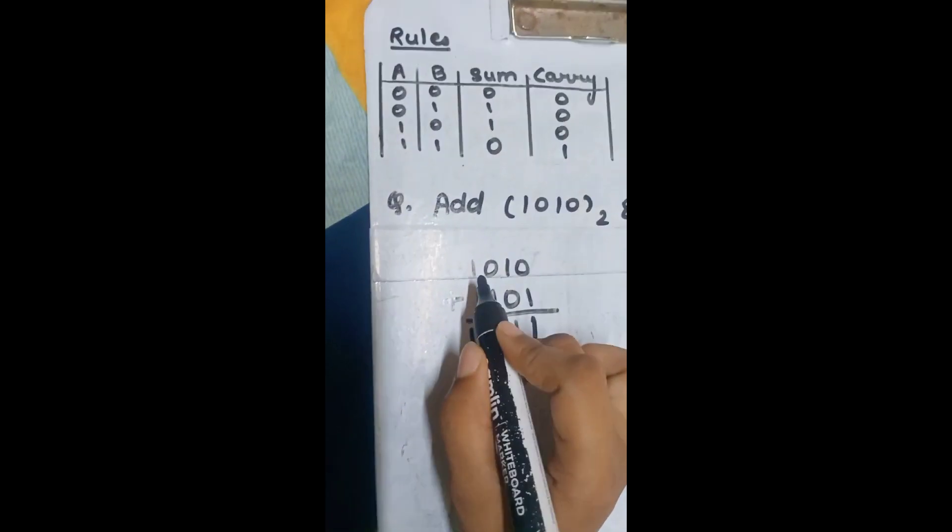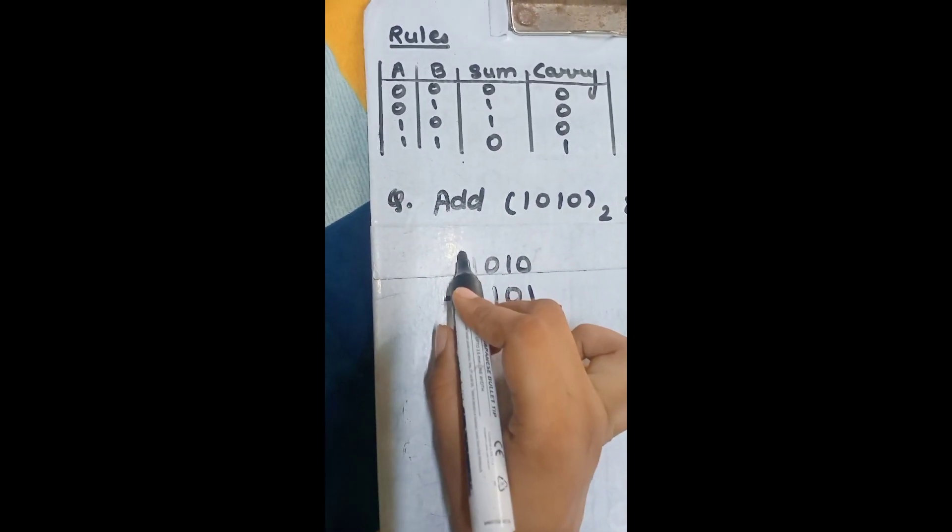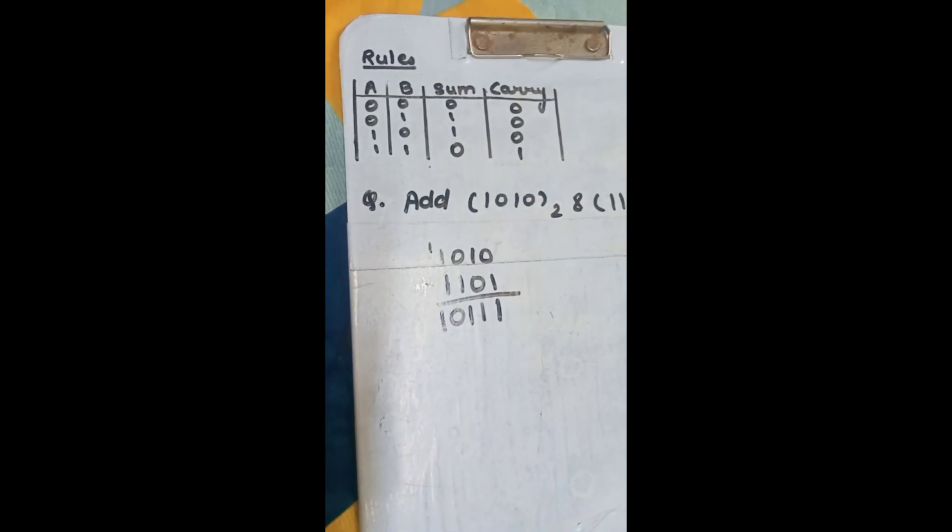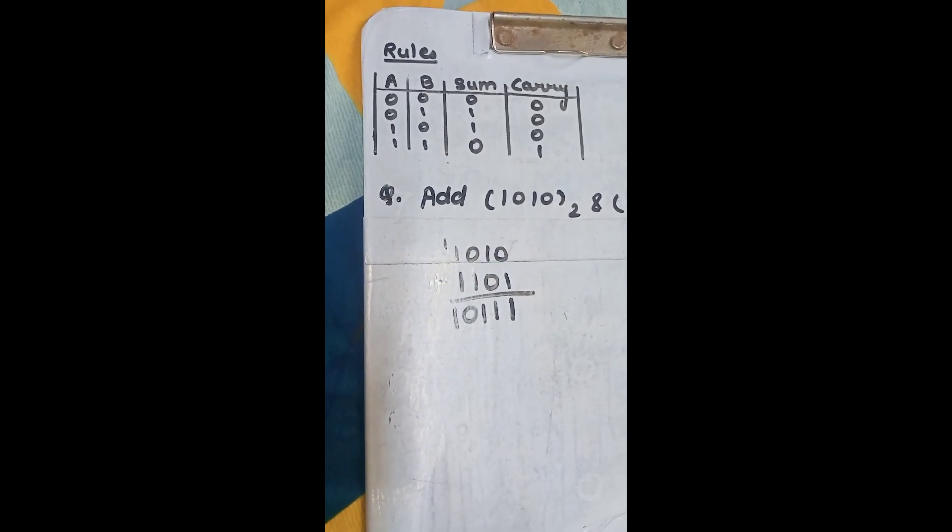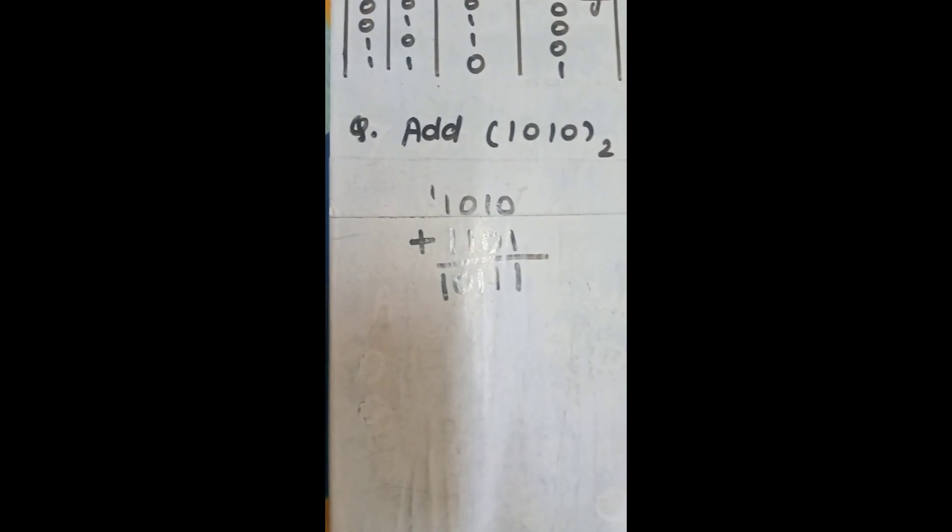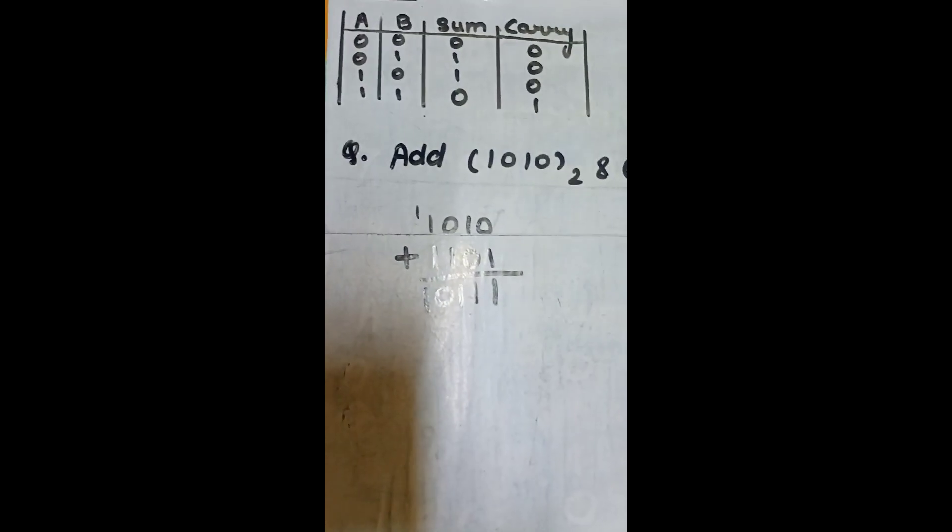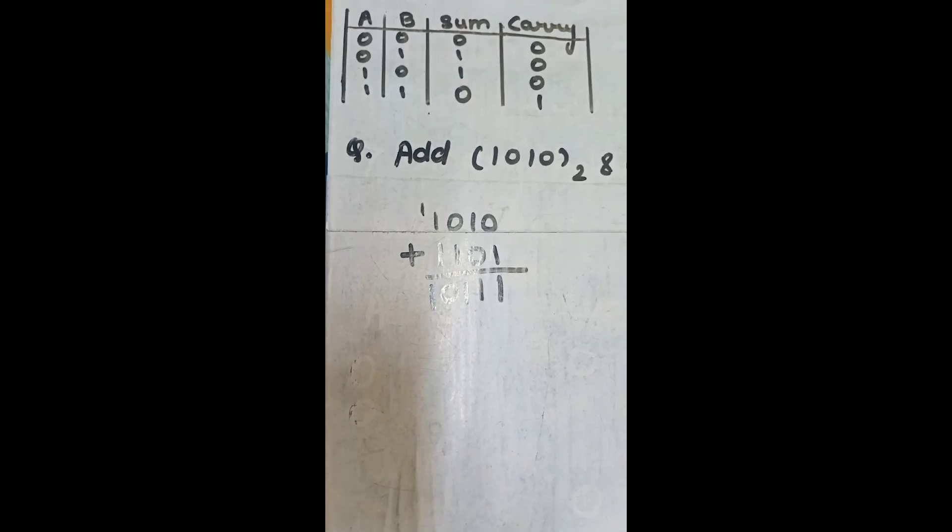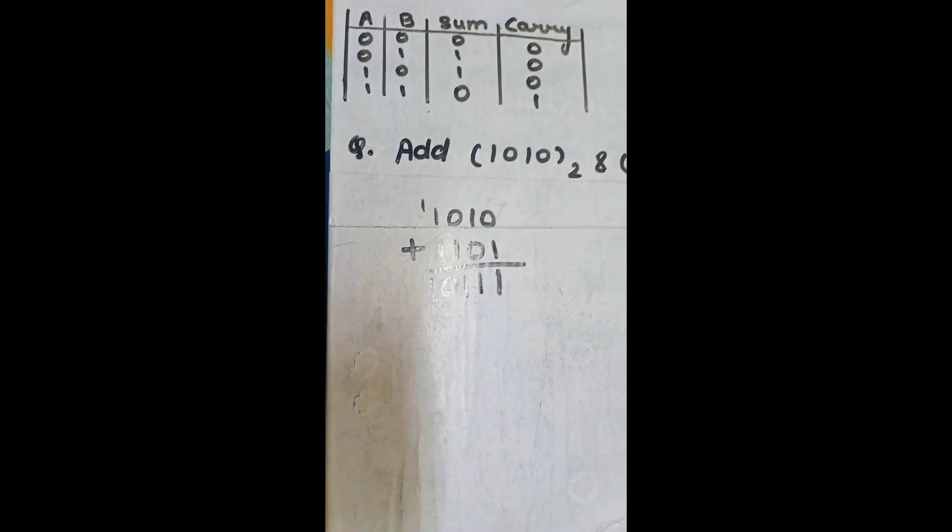and carry is 1. That is, you have to write 1 at the top here and which you have to write below. So, like this, you have to add two binary numbers.